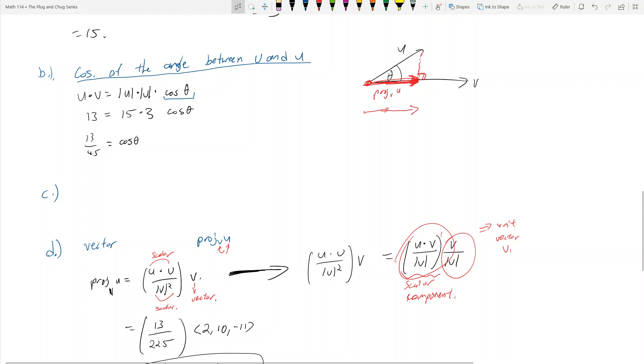So I know the book says something really weird, but this is what the scalar component is. And it's just u dot v over the magnitude of v. And what is that? And I think that's part c. Yeah, okay. So what's the scalar component? Well, it's u dot v, which is 13, over the magnitude of v, which ends up being 15. And so the scalar component is going to be 13 over 15.